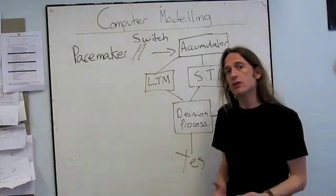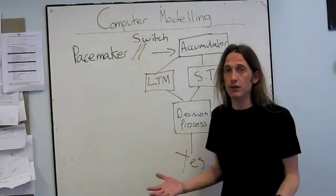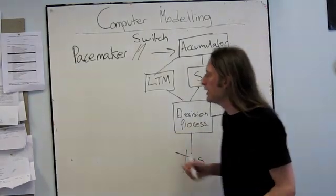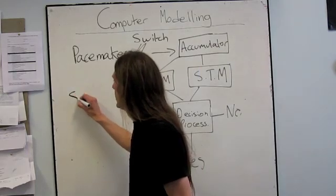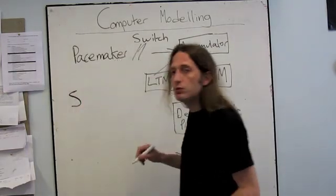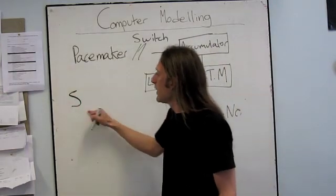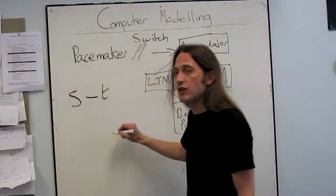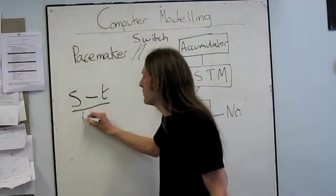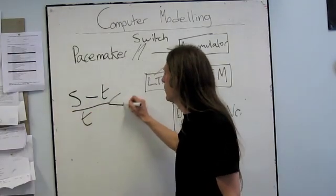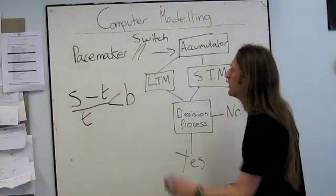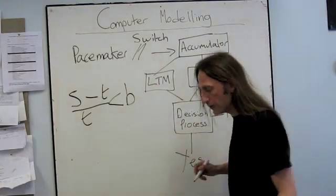An algorithm is just a rule that we give the computer so it knows how to perform the experiment. The algorithm we use is this: the computer will say yes if the standard duration minus the comparison duration divided by the comparison duration is smaller than some threshold value. Let me just write that out for you.